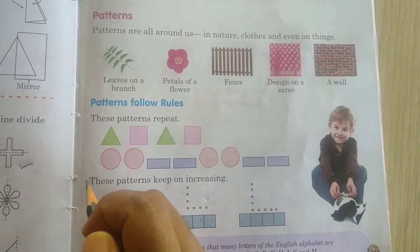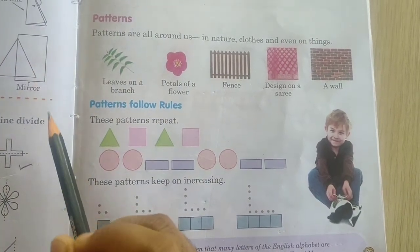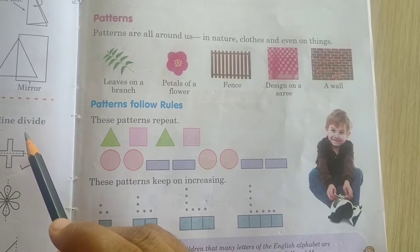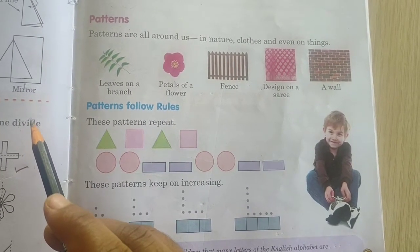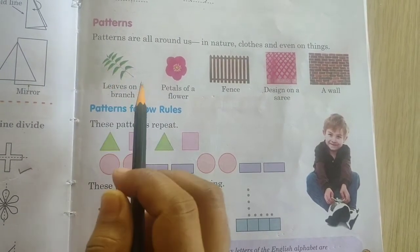Whatever line we will draw in between, we call it as line of symmetry. In this class we will study about patterns. Patterns are available all around us. Like we can say that leaves on the branches, this is one pattern.